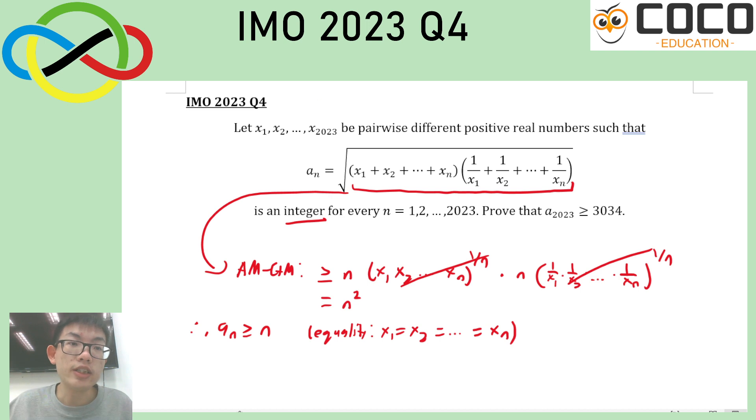Now you can see that what we are asked to prove is a little bit more than that. We are asked to prove that it is going to be at least 3034, not at least 2023. So one thing that we are told is pairwise different. And pairwise different means that at the very least, we understand that equality cannot hold. So it would be more than 2023. But if I just nudge each of them a little bit, it is going to be quite easy to nudge it to 2024. So the reason why it ends up being at 3034 must have something to do with the is an integer for every n.